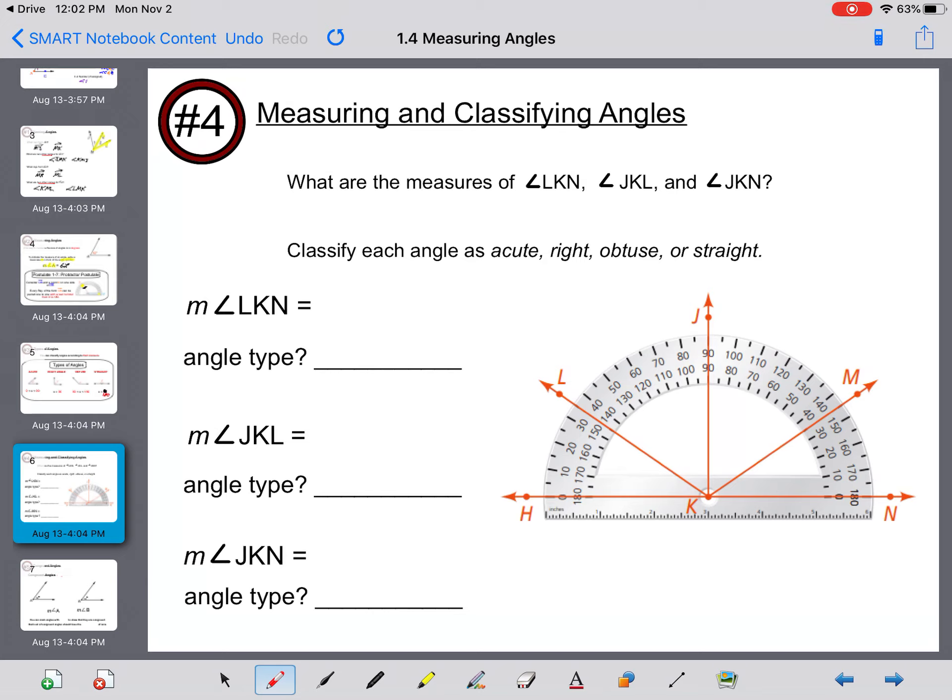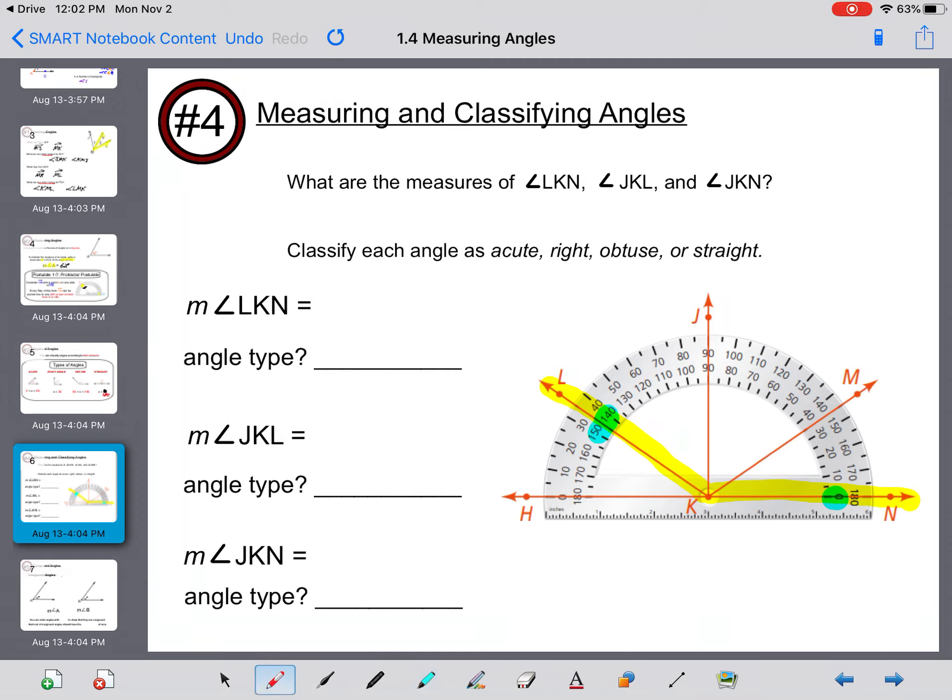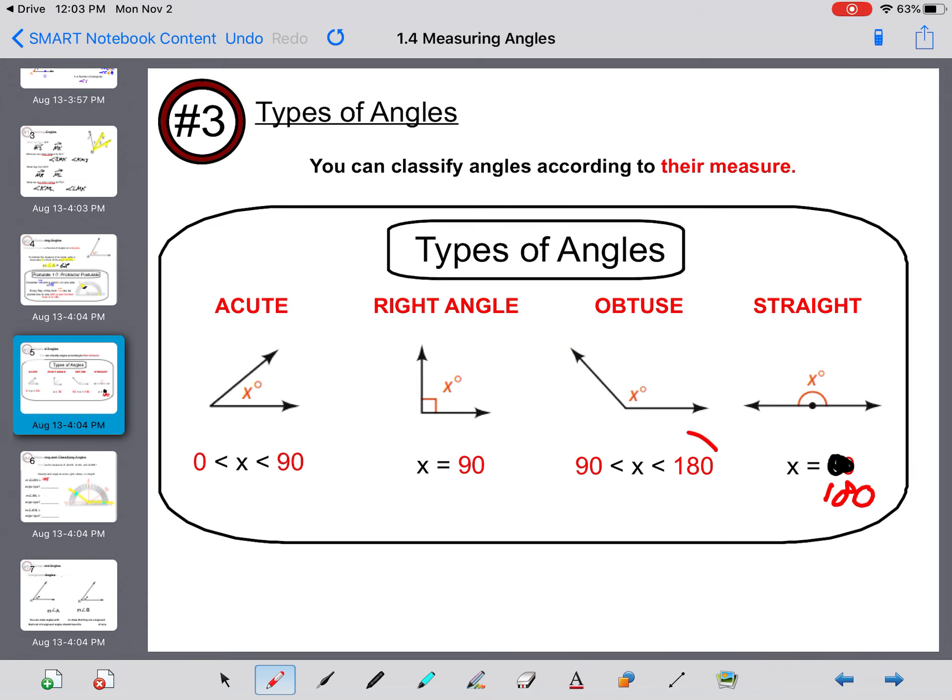Measuring and classifying angles. What are the measures of LKN, JKL, and JKN? The measure of angle LKN: you start at zero degrees and this extends all the way between 140 and 150. So right in between 140 and 150 is 145. Since it's 145 degrees, that would fall into our obtuse category.